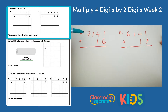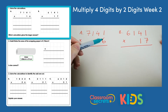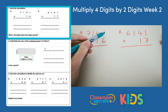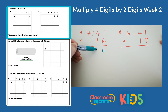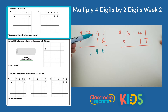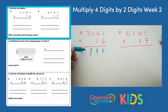The first calculation is 7141 multiplied by 16. The first step is to multiply everything by the ones number. So we do 6 multiplied by 1 is 6. 6 multiplied by 4 is 24, so we put the 4 in the tens column and exchange the 2. 6 multiplied by 1 makes 6, and then add the 2 gives us 8. And then 6 multiplied by 7 is 42.